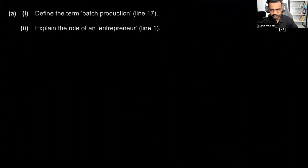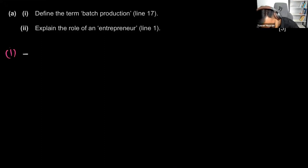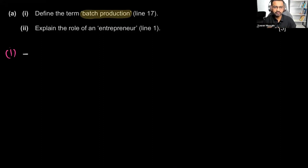Part A is similar to Section A of Paper 1. First, a two-mark question — you should write two points. The question is: define the term batch production. You could define what batch production is and give an example of a type of business that might use it, or define two different stages of batch production.